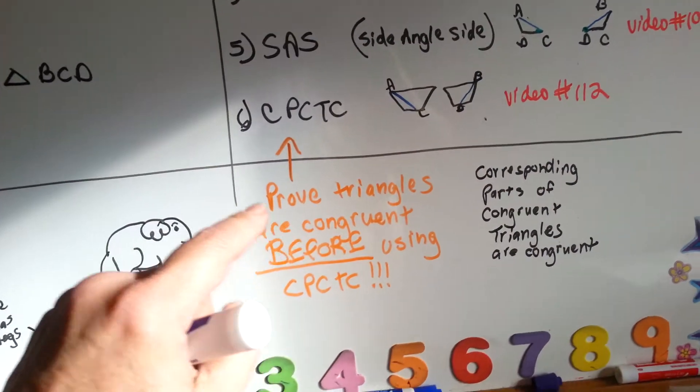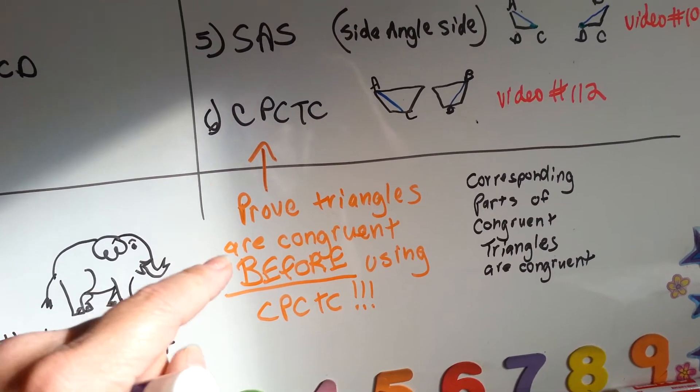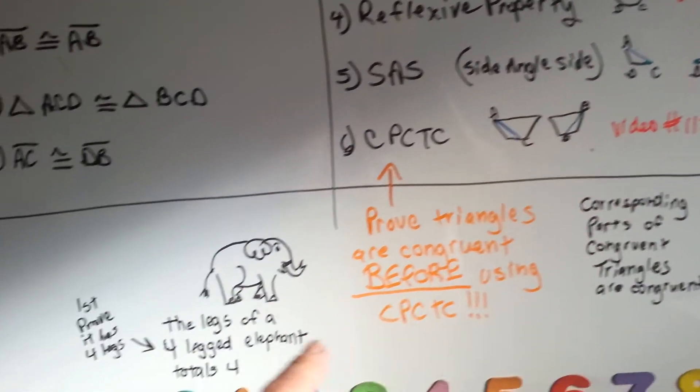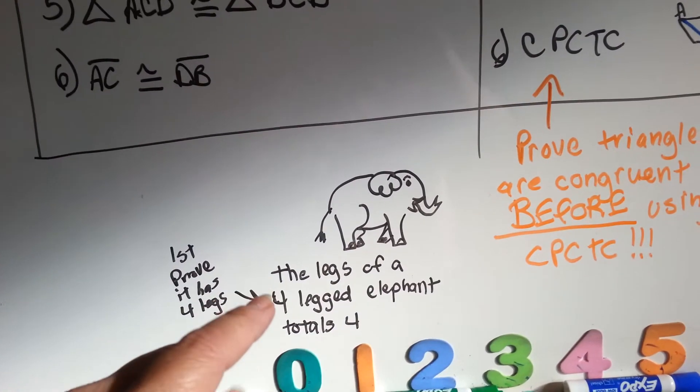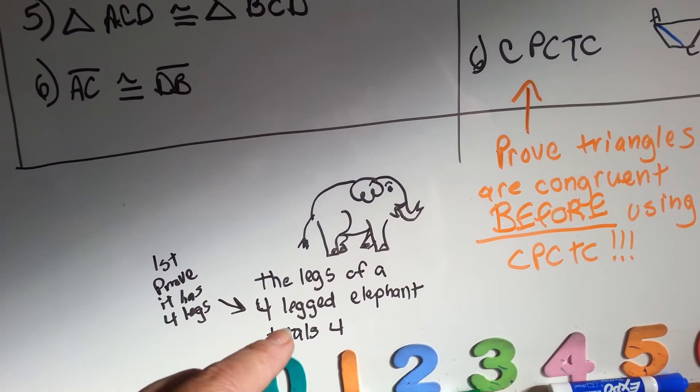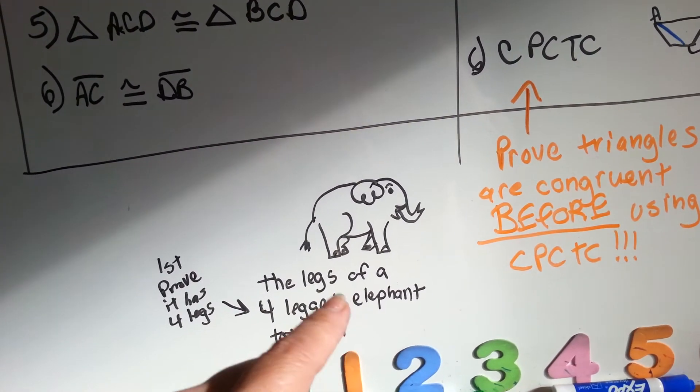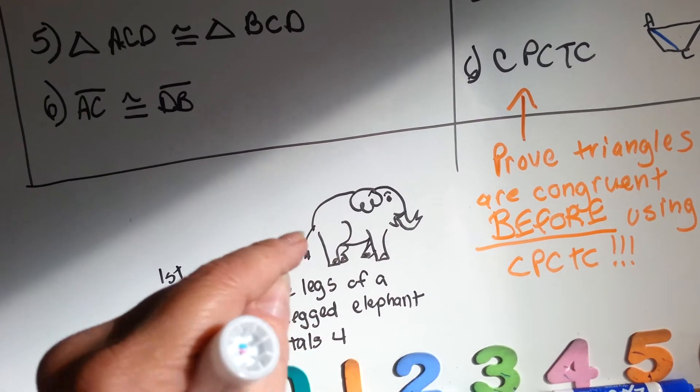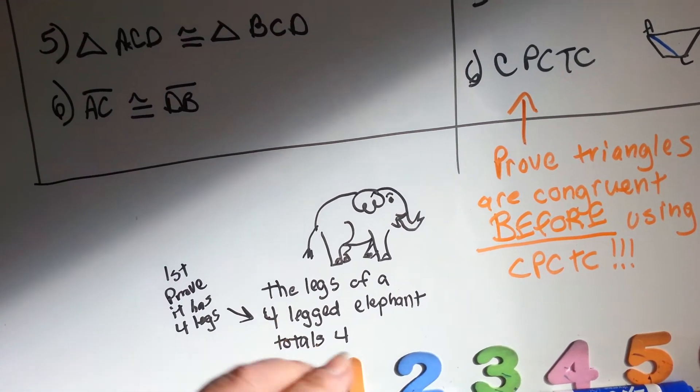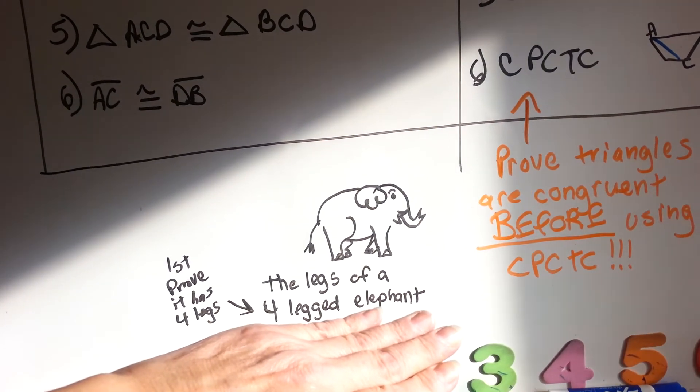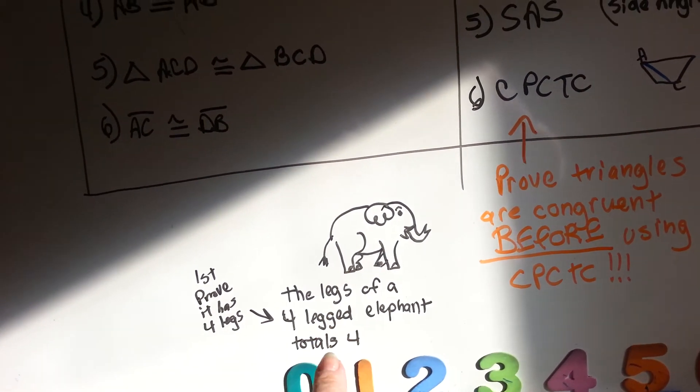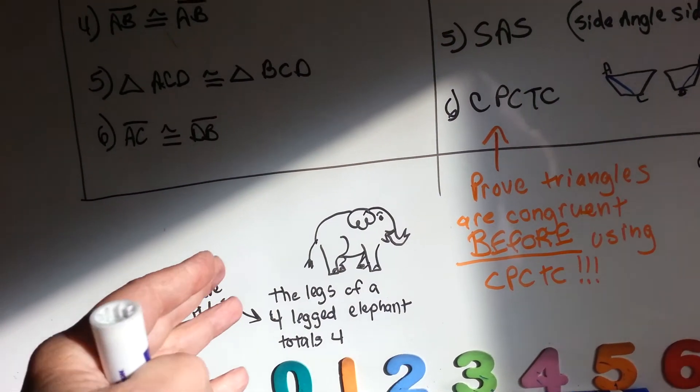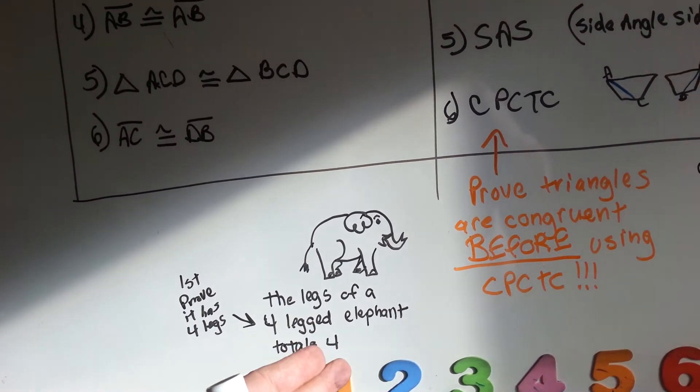Now, you must, must, must prove that triangles are congruent before using CPCTC. Basically, and I explain this in video number 112, it's like saying the legs of a four-legged elephant totals four. Before you can say it's a four-legged elephant, you have to prove it's a four-legged elephant. Either you label them or count them or do something to prove that it's a four-legged elephant before you can even make this comment. You have to prove it has four legs first. And then, yes, of course, it will total four. And I know it sounds silly. Why would you need to prove it if you're stating it here? But this is an after statement.